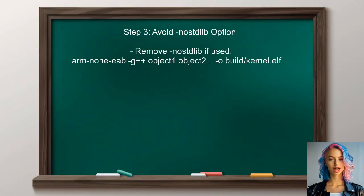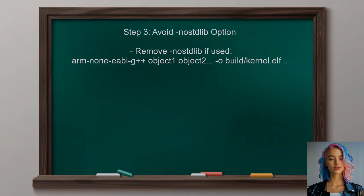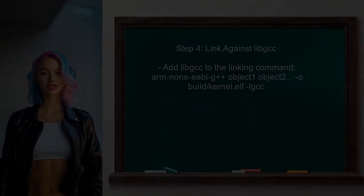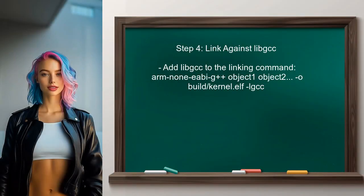Additionally, the user should verify that they are not using the -mno-stdlibs option unless absolutely necessary. This option can prevent the inclusion of essential libraries that define functions like __aeabi_unwind_cpp_pr1. If the problem persists, the user can consider adding the necessary library explicitly.